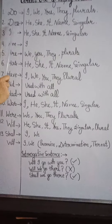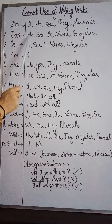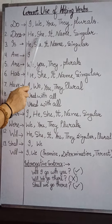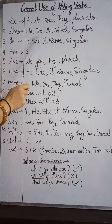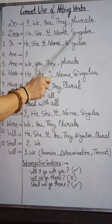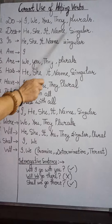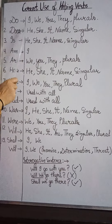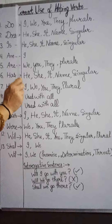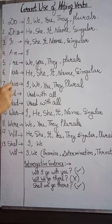फिर 'does' की बात करते हैं। 'Does' जो है वो 'he' के साथ use होता है — जैसे 'he doesn't come here daily,' 'she does not listen to me.' He, she, it — it के साथ भी 'does' लगता है। किसी का name हो तो name के साथ भी 'does' लगता है, और singular के साथ भी। He, she, it, name और singular के साथ कभी भी 'do' use नहीं करते — हम कभी नहीं कहते 'he do not know,' यह एक बहुत बड़ी mistake है। हम हमेशा कहते हैं 'he doesn't know।'